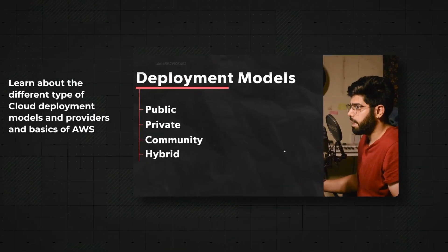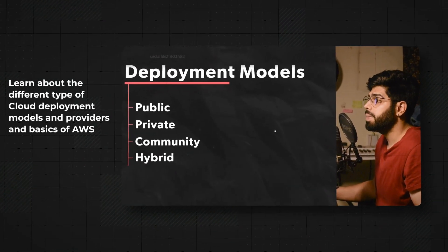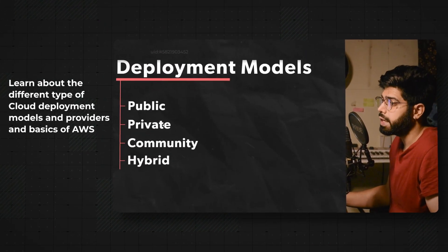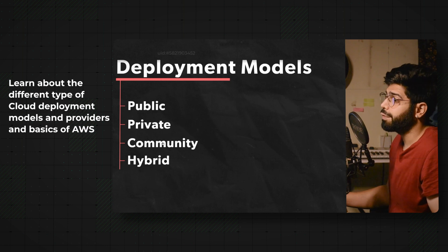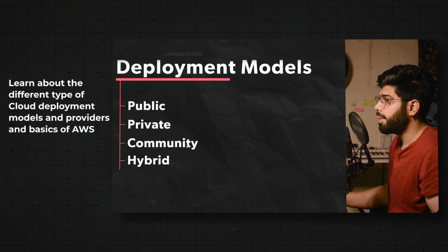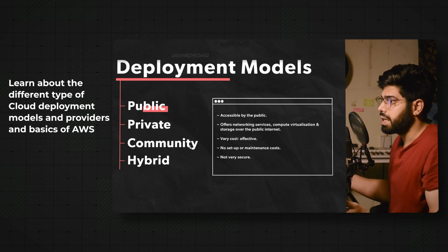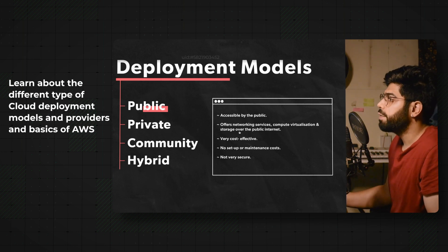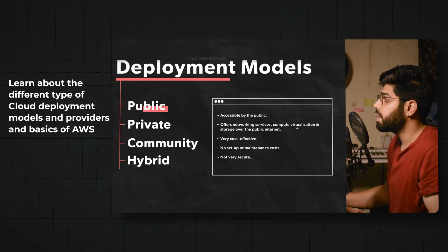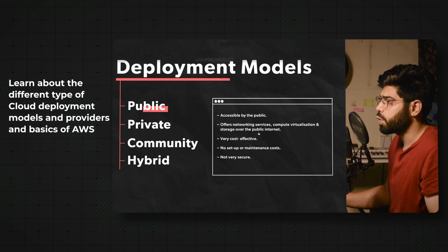There are four types of deployment models: the first being public, the second being private, the third being community, and the fourth being hybrid. Talking about the public model, as the name suggests, it is accessible to the public. It offers networking services, computing, virtualization, and storage over the internet to the public.